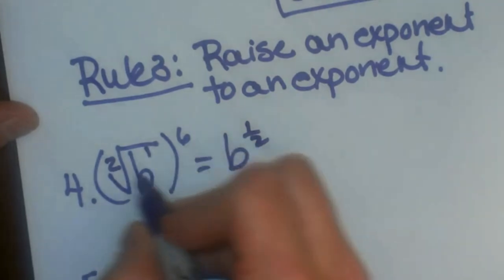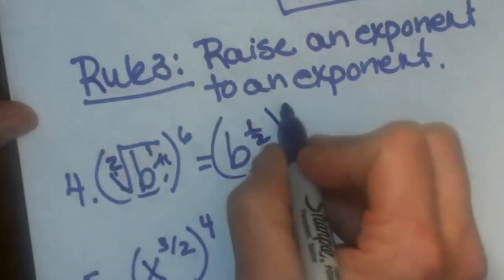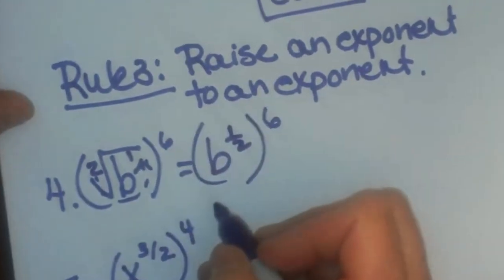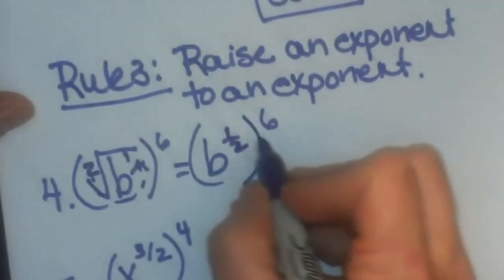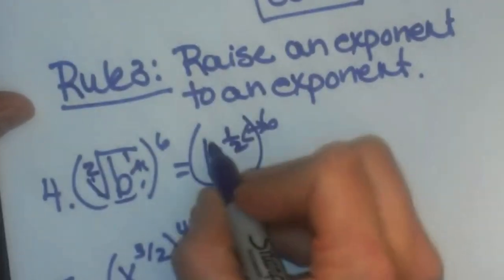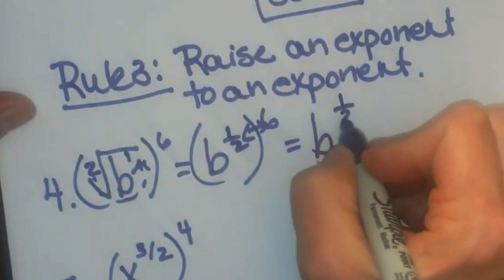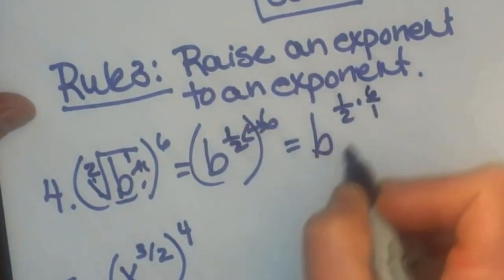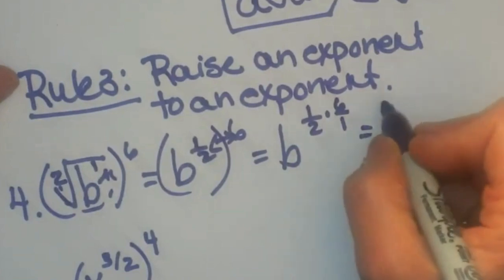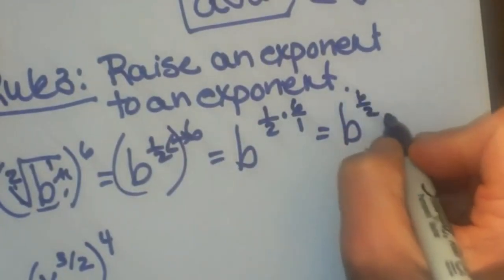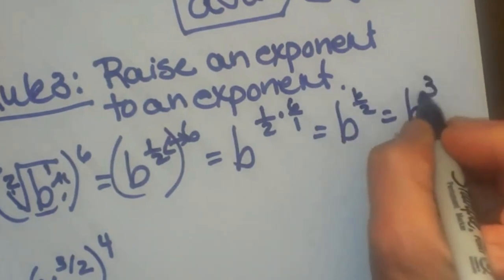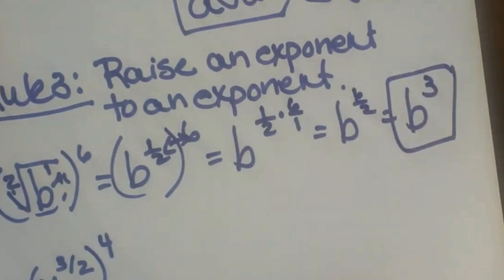And then b to the one half to the one sixth. Well, when you are raising to a power you are going to multiply the two exponents together. So I am going to get b to the half times six over one, so that is going to give me b to the six halves, which is also b cubed. And that would be my final answer.